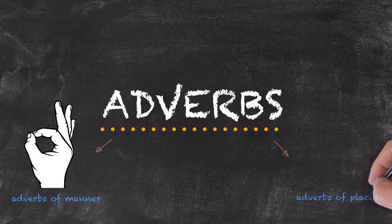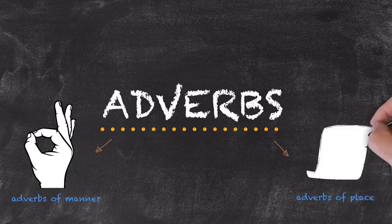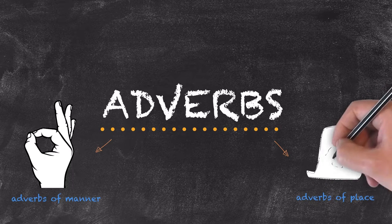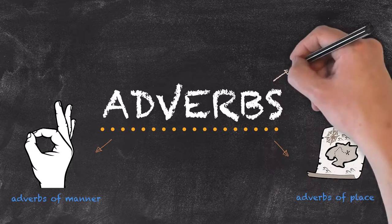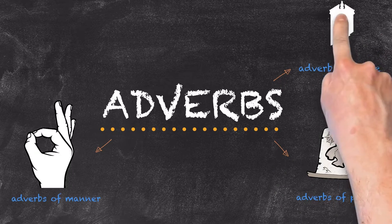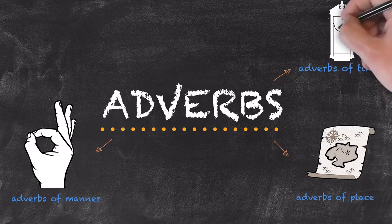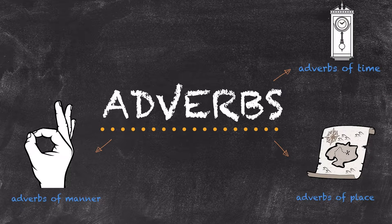We have adverbs of place, describing where the action happened. Two examples are here or there. We also have adverbs of time, describing when the action happened. Two examples being now or recently.